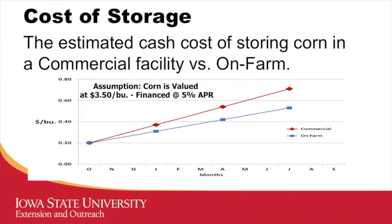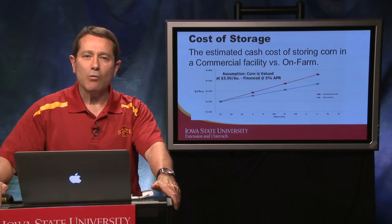Cost of storage is the estimated cash cost of storing corn in a commercial facility versus on-farm. Let's use corn with a value of $3.50 per bushel cash price, with interest accruing — whether on the on-farm storage facility or on money borrowed against corn being stored — an initial $0.20 per bushel lift charge for handling those bushels, and then note either the blue line for on-farm storage cost or the red line for commercial storage cost. Storage isn't free, and it's important to recognize your own cost of storage.